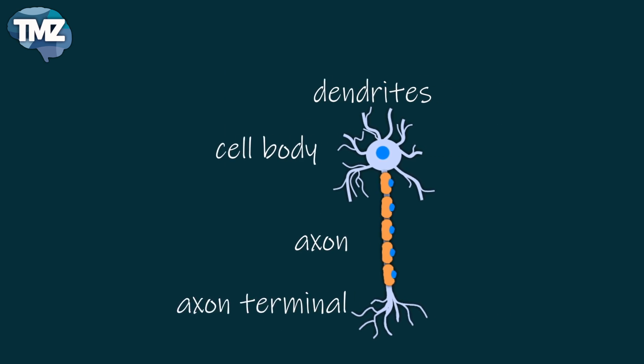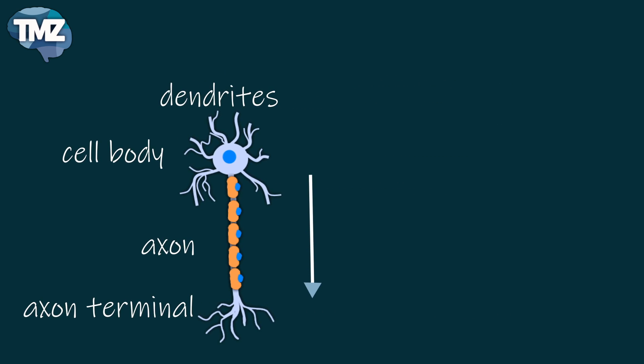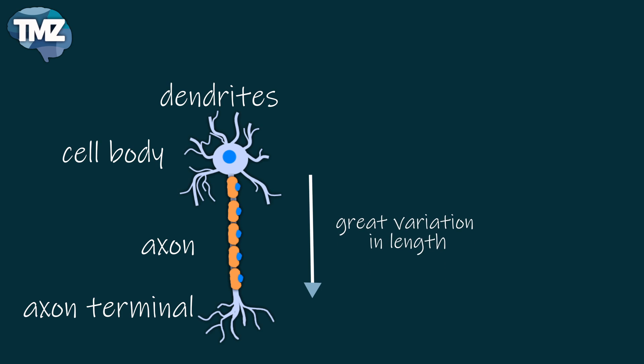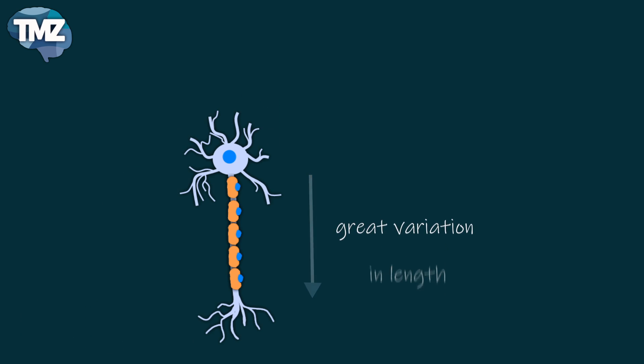The axon varies in length and complexity — in some cases only a few millimeters long, to quite a distance. It transmits electrical signals from the cell body to the axon terminal, towards target neurons.